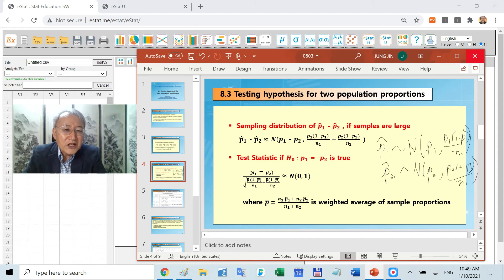But if H0 is true, that means P1 minus P2 equals 0. But we don't know about P1 and P2. How can you handle that problem? Since we don't know P1 and P2, you need to estimate that. As we did in case of testing two population means where we used the pooled variance, similarly, we are using some kind of a pooled proportion.